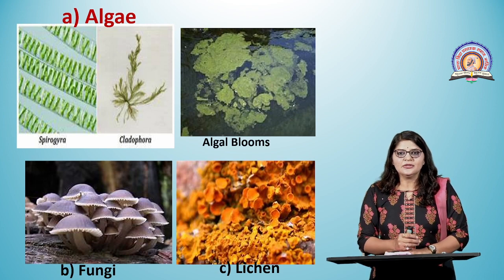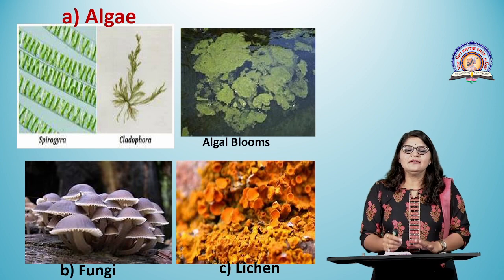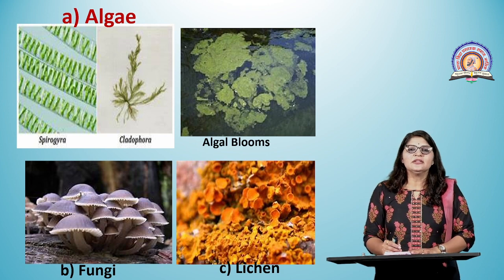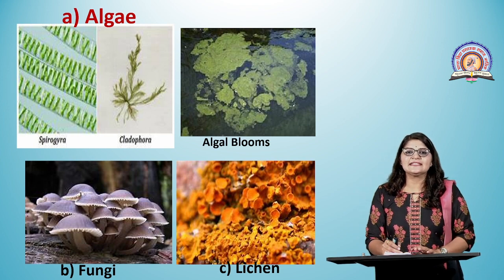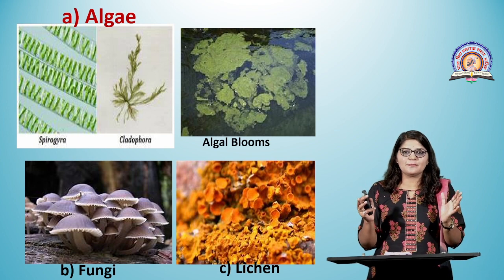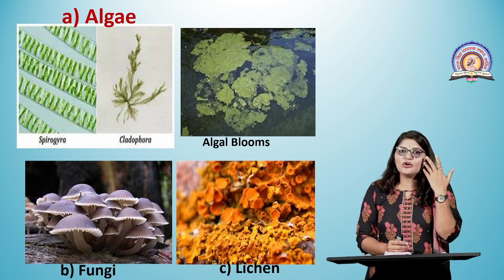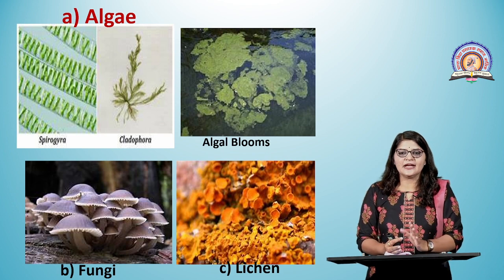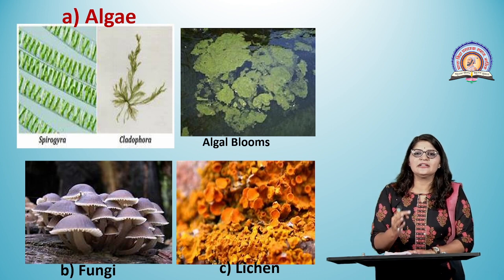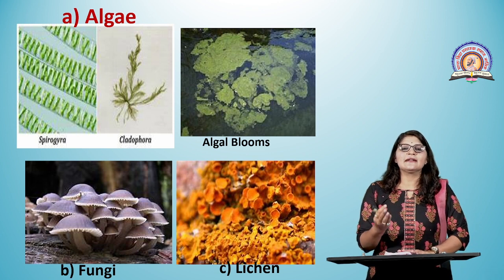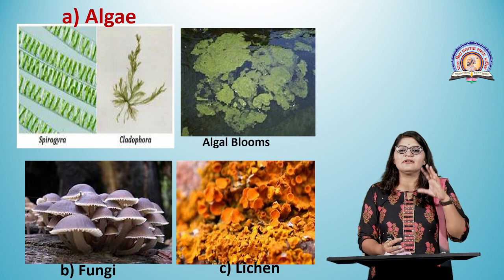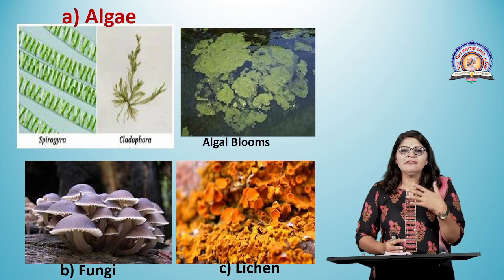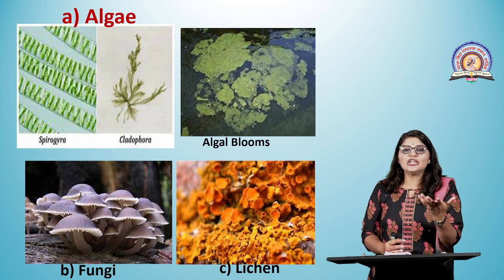Algae (called 'Shaival' in Marathi) are specifically found in water and terrestrially on moist soil. They show variety of forms and sizes — microscopic to macroscopic. In the pictures, you can see different forms: Spirogyra and Cladophora are green algae. On water surfaces there can be extensive growth of algal filaments and algal mats, commonly called algal blooms.